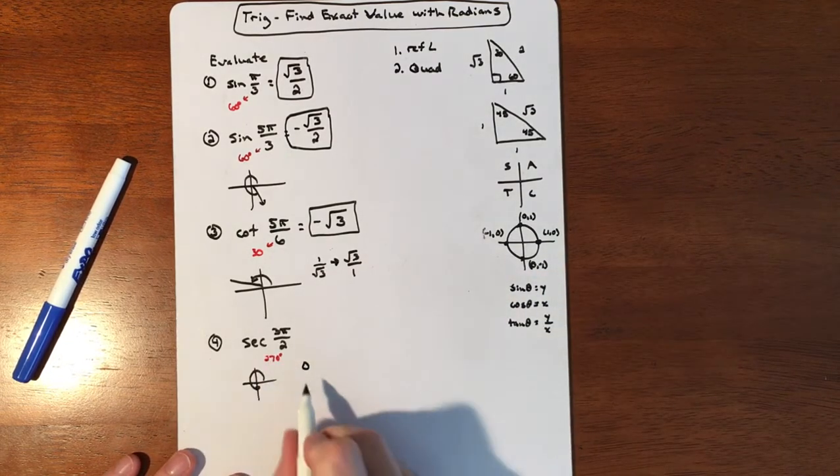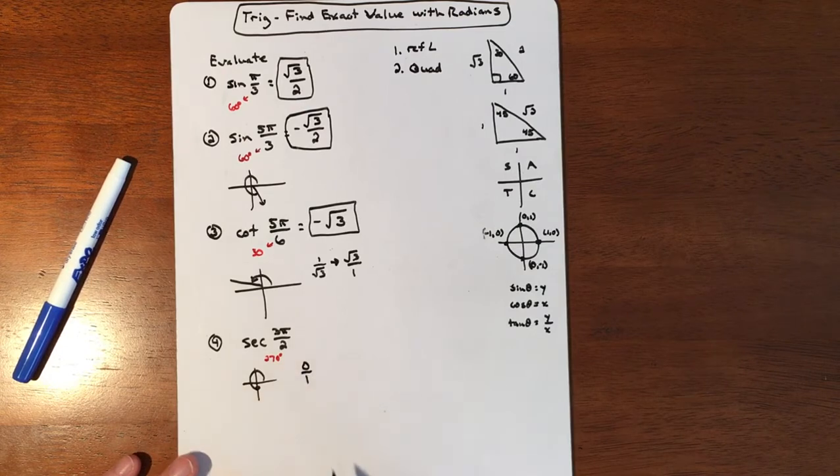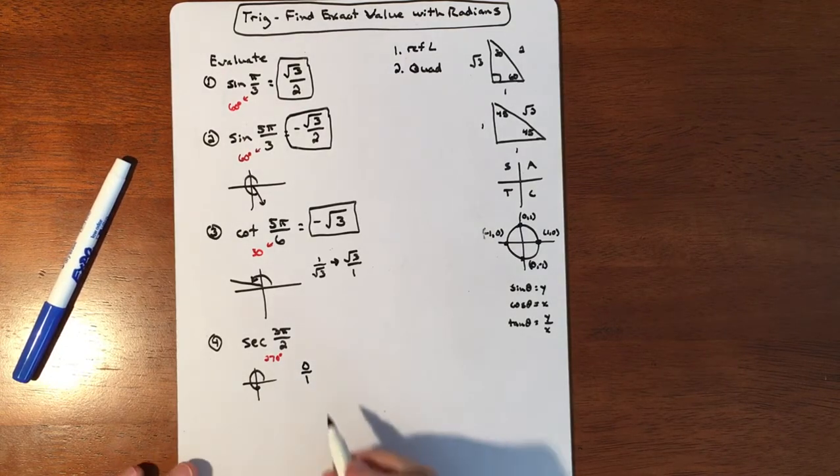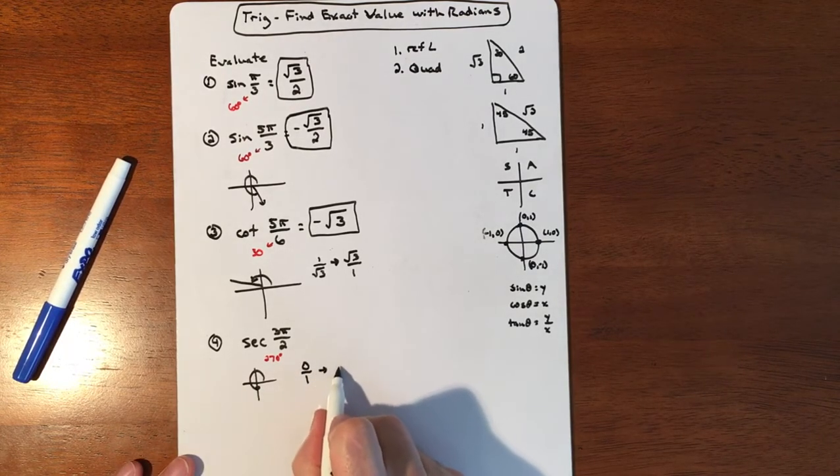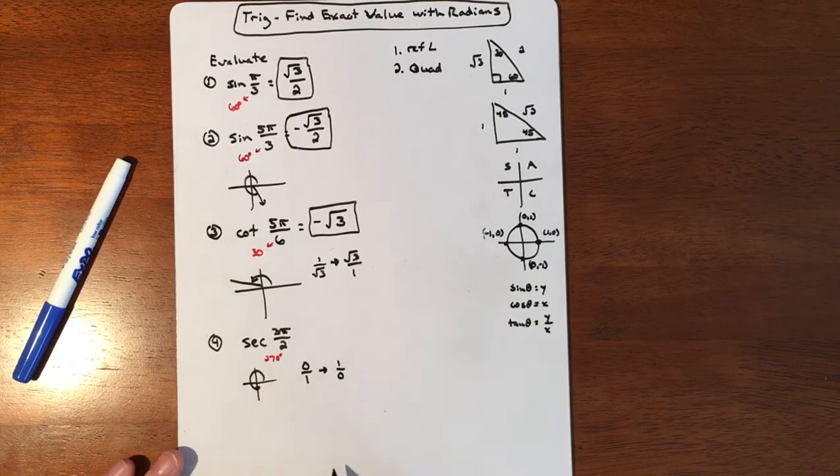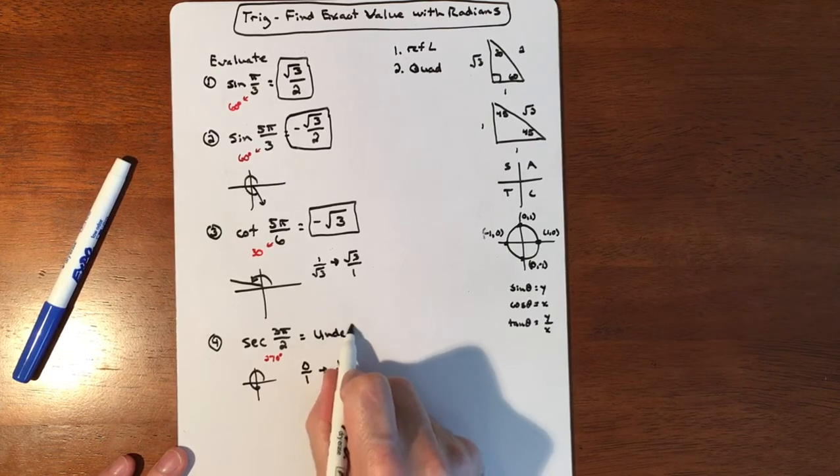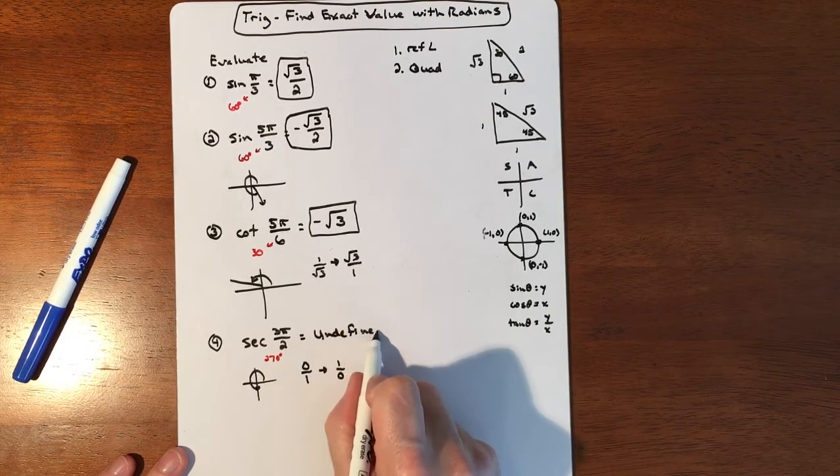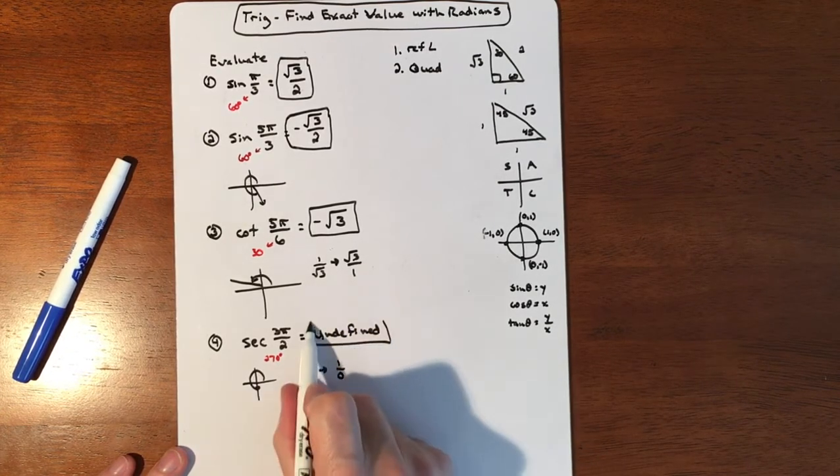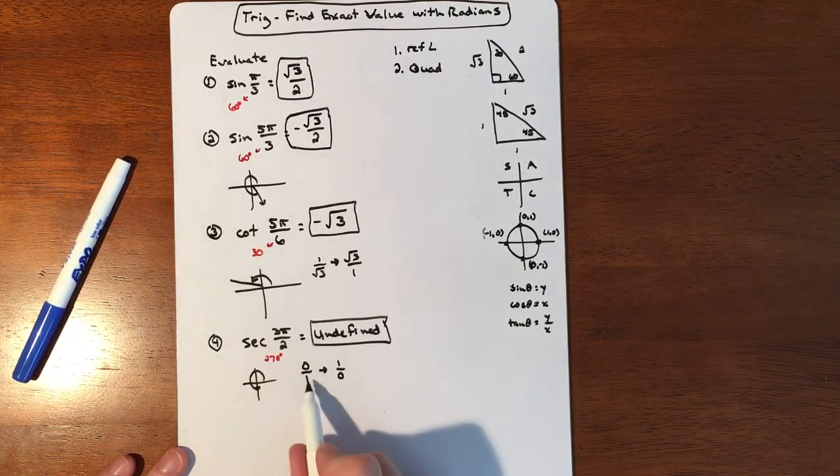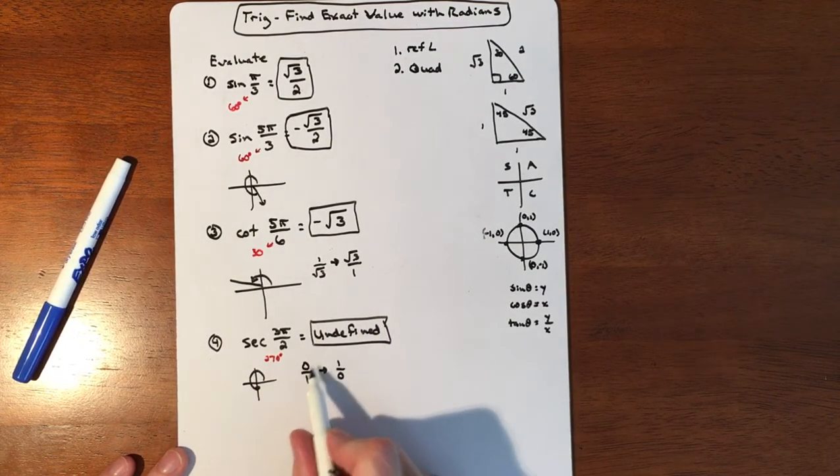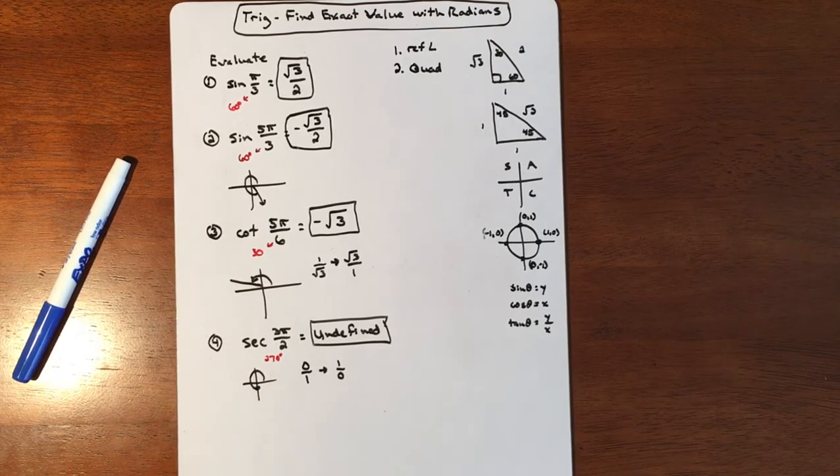But we want to do the reciprocal of that. So we'll need to force it into a fraction so we can do the reciprocal. And then when we do the reciprocal of that, we'll get this. And that is undefined. So sines and cosines won't have undefined, but the reciprocals of them may because you may have some zeros, and you may be doing some reciprocals of those.